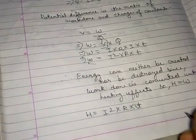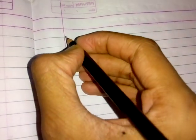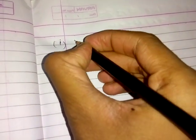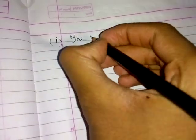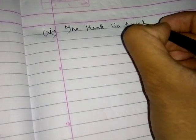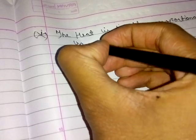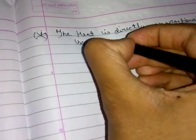We can also write this as: heat is directly proportional to the square of current, resistance, and time.